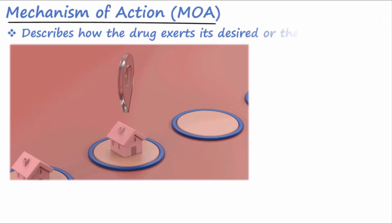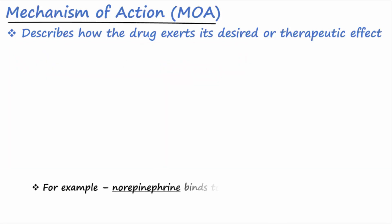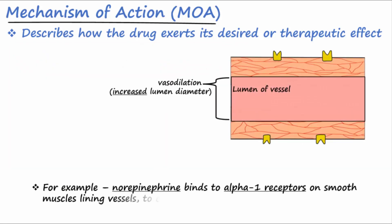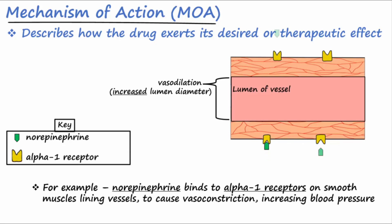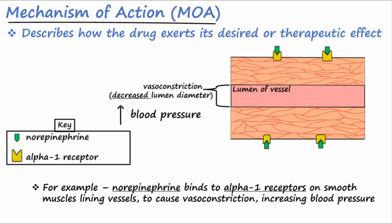Mechanism of action refers to how the drug works to exert its desired or therapeutic effect. For example, the drug norepinephrine, an alpha-1 agonist, binds to and activates the alpha-1 receptors on smooth muscles lining blood vessels, resulting in muscle contraction and vasoconstriction. Vasoconstriction causes the diameter of the vessel lumen to become smaller. Constriction confines the blood to a smaller space, therefore increasing systemic vascular resistance and blood pressure. The indication for norepinephrine is low blood pressure or hypotension, and it treats this by increasing blood pressure.